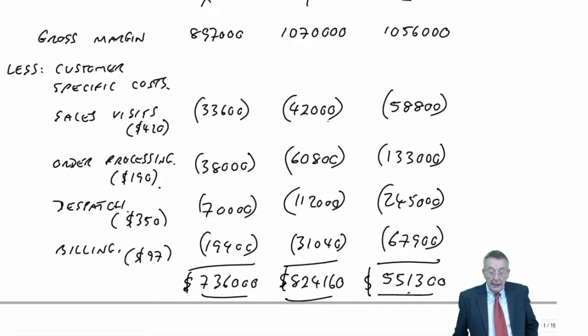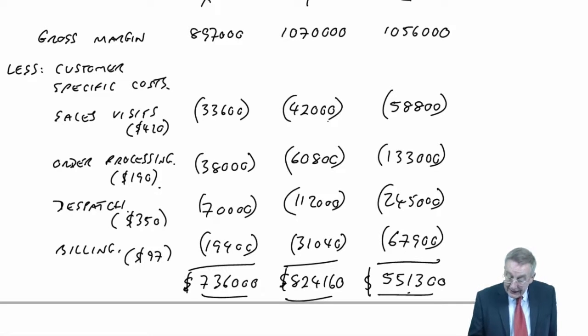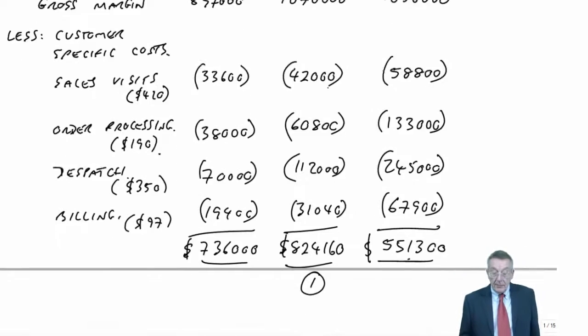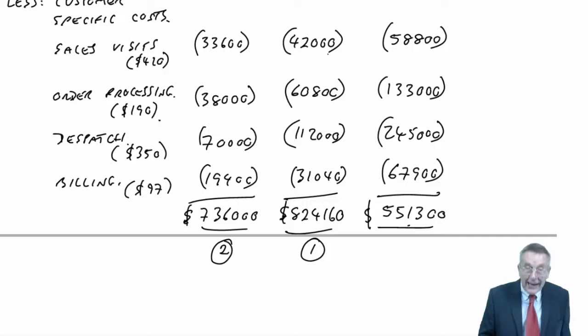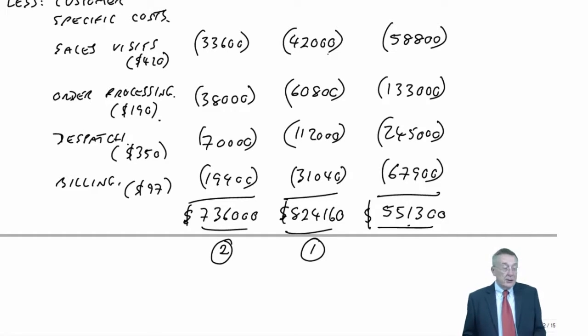So, arithmetically, I don't think too much of a problem. But what's the relevance of that? It asks us, how should the customers be ranked? Well, it turns out that Y, who did have the highest gross margin, does turn out to be best at 824,160. However, second best is X. We're just looking at gross margin, seem to be quite a way down on number two. But X turns out to be second best, and Z turns out to be third best.